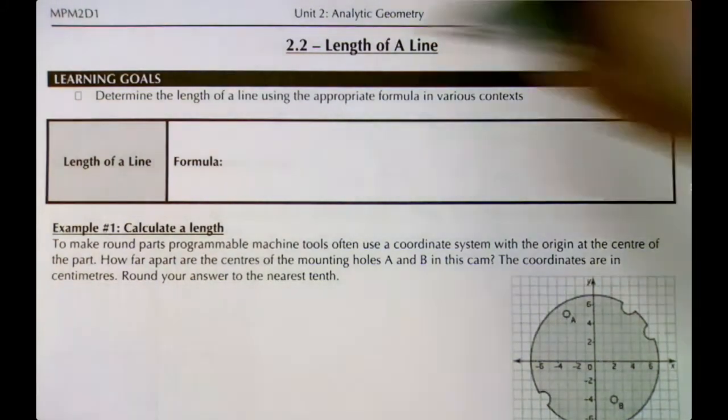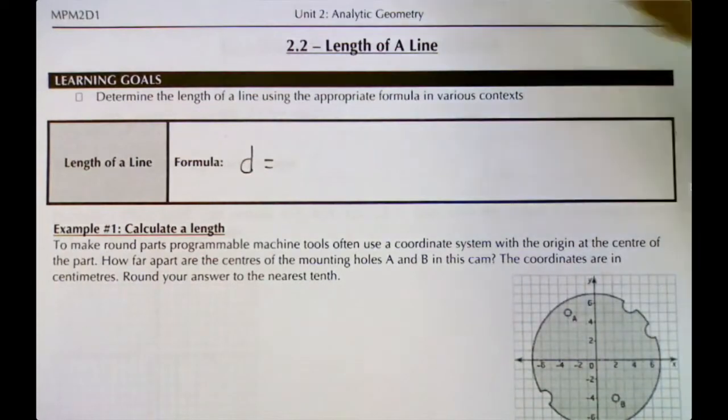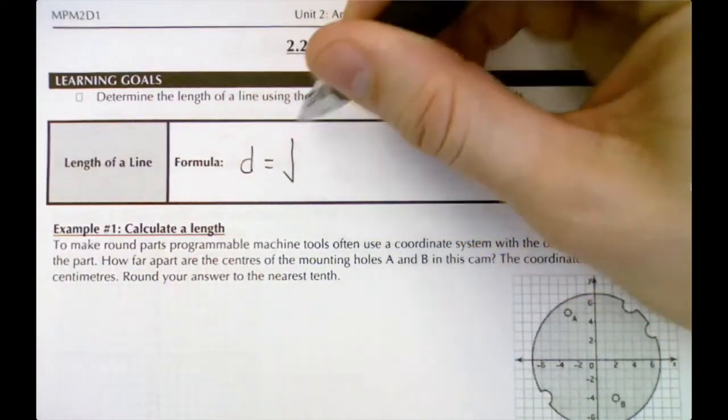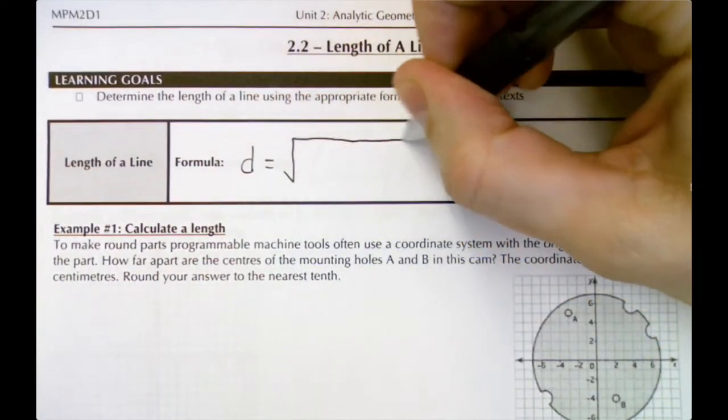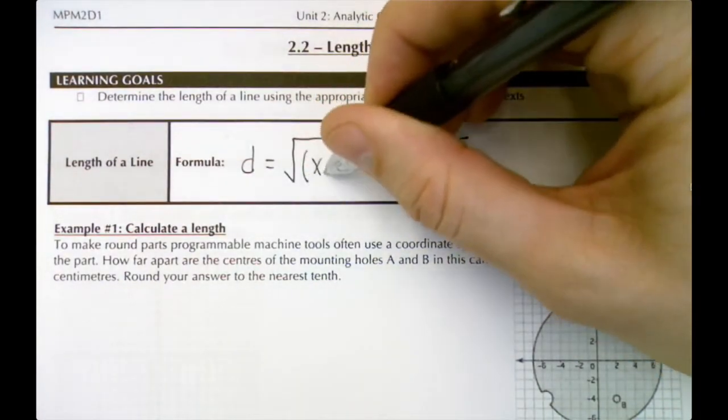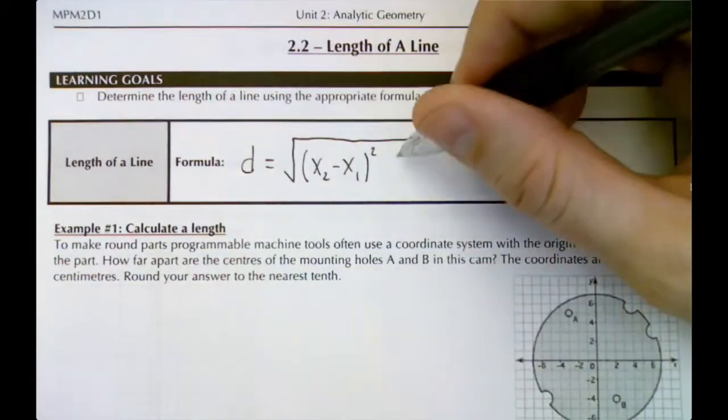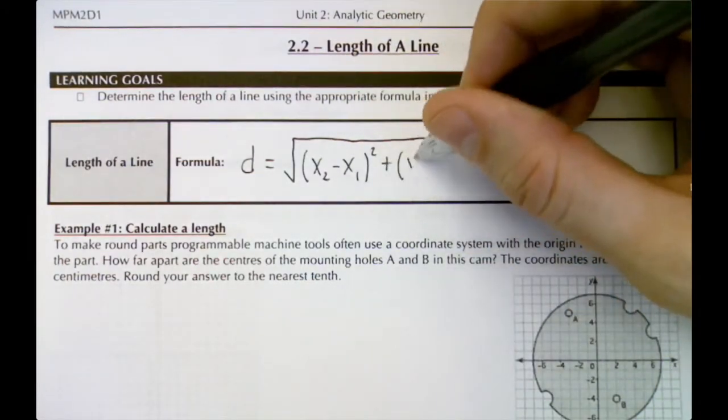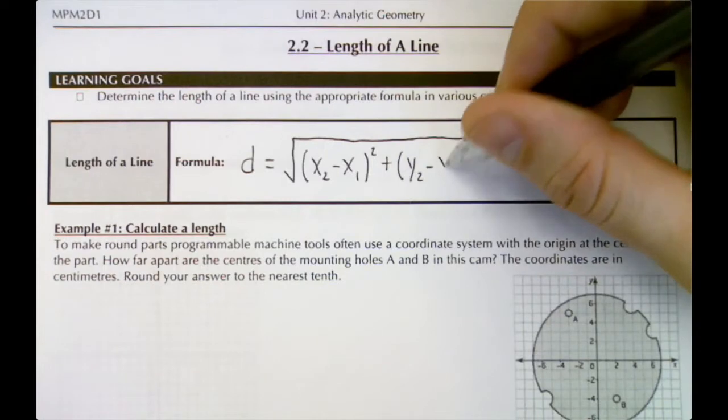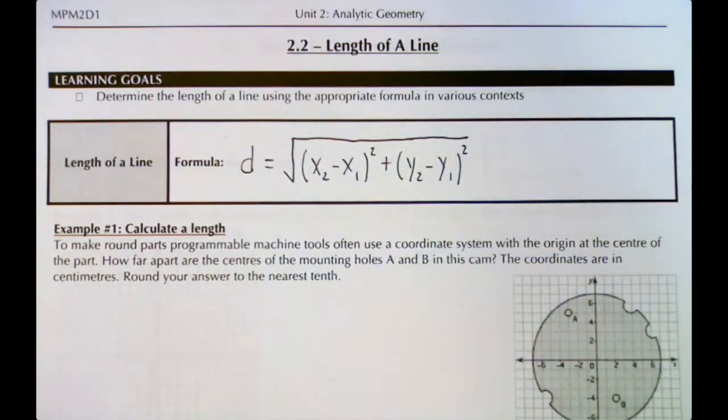The distance formula to determine the length of a line looks like d for distance equals the square root—it's a big square root sign—of (x₂ minus x₁) squared plus (y₂ minus y₁) squared, and all of that is underneath the square root sign.